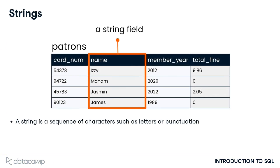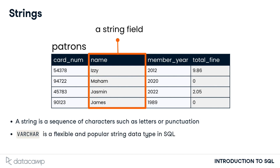In programming, a string refers to a sequence of characters such as letters or punctuation. On the patrons table, the data in the names field is made up of strings, such as Maham and James. SQL has several different data types that can hold strings. Some string data types can only hold short strings, such as a string up to 250 characters, which saves storage space. SQL's varchar data type is more flexible and can store small or large strings, up to tens of thousands of characters. Because of its flexibility, varchar is very commonly used for storing strings.